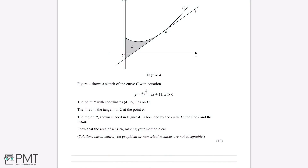Figure 4 shows a sketch of the curve C with equation y equals 5x to the power of 3 over 2 minus 9x plus 11, where x is greater than or equal to 0. The point P with coordinates (4, 15) lies on C. The line L is the tangent to C at the point P. The region R, shown shaded in figure 4, is bounded by the curve C, the line L and the y-axis. Show that the area of R is 24, making your method clear.